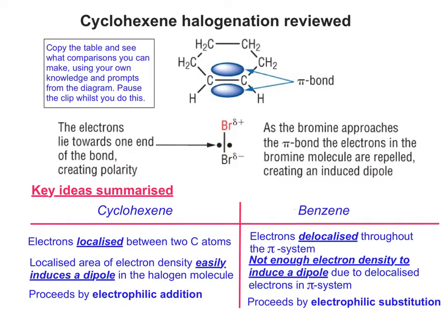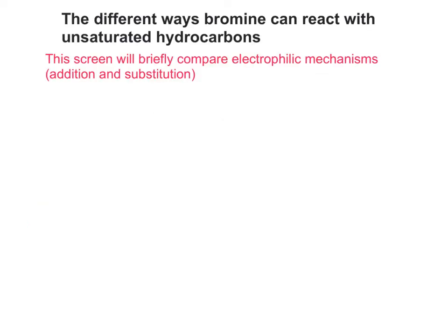There's not enough of them in one place to induce a dipole easily. Therefore the cyclohexene halogenation proceeds by electrophilic addition, whereas the benzene halogenation proceeds by electrophilic substitution. Let's follow up by having a quick look at the two different mechanisms that we need to think about.